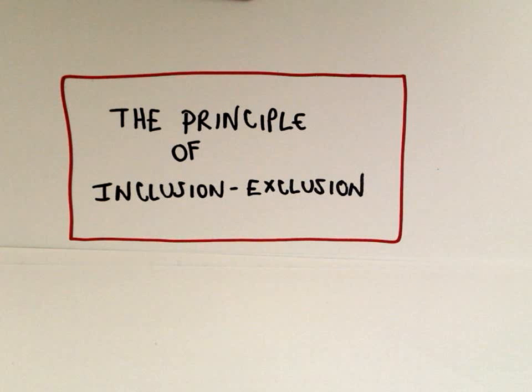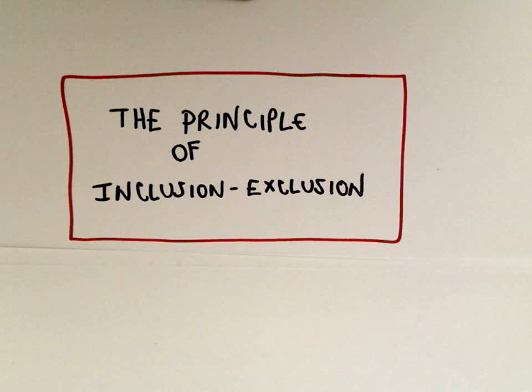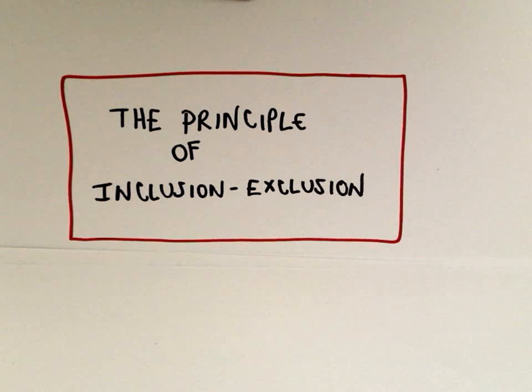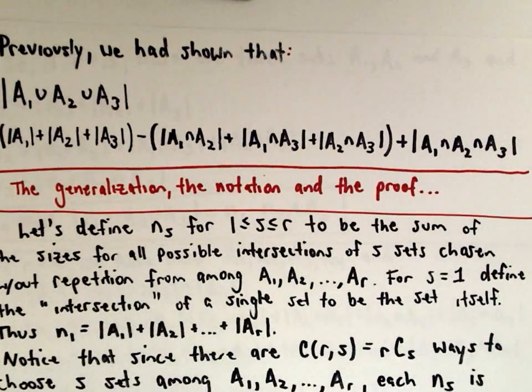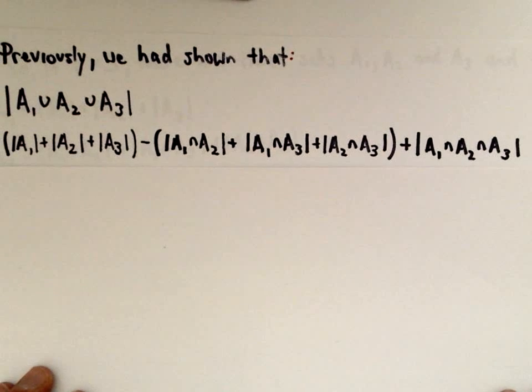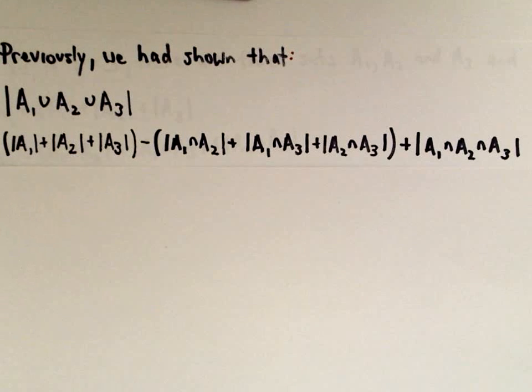This is going to be part two about the principle of inclusion and exclusion. In this video I'm just going to run over some notation and the proof — I basically have everything written down and I'm just going to talk through it. If you're not interested in the proof, feel free to skip this video. It's just a justification of the formulas we saw, and in the follow-up videos I'll show some concrete examples.